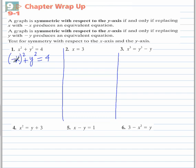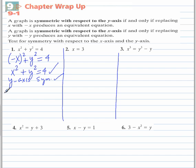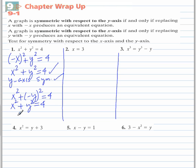When you square negative x, you're going to get positive x squared. So as you see, we did end up with the same equation as we started out with. So there is y-axis symmetry. Now we're going to check for x-axis symmetry by replacing y with negative y. Once again, we end up with the same equation as we started out with. So there is x-axis symmetry.